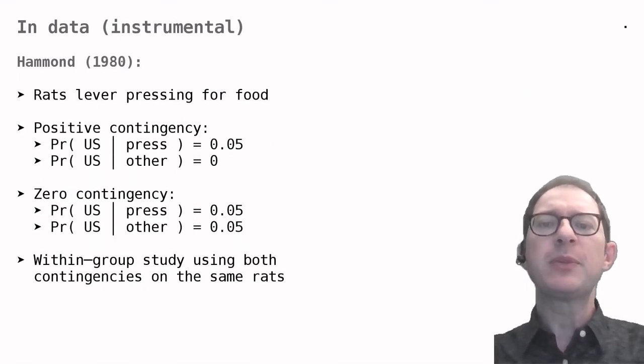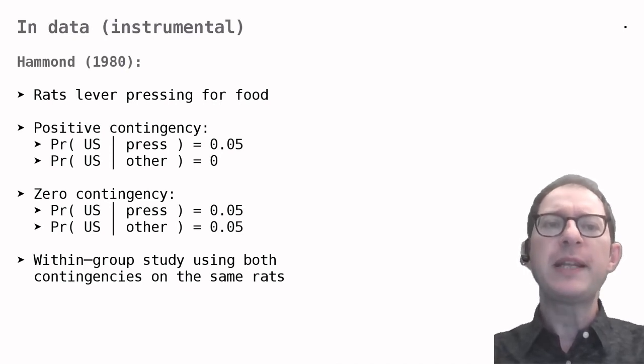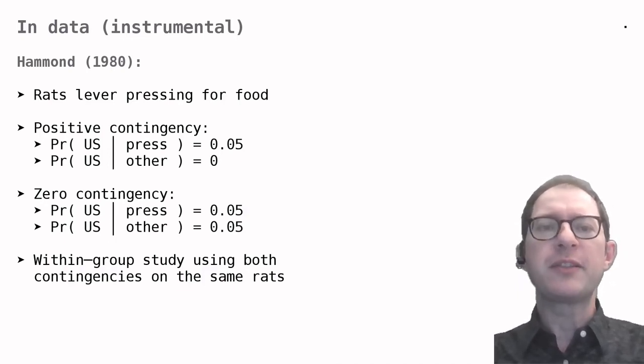Rescorla's example was about Pavlovian conditioning. What about contiguity and contingency in instrumental conditioning? It turns out things work pretty much in the same way, but in instrumental conditioning we are looking at the relationship between an action and its outcome.